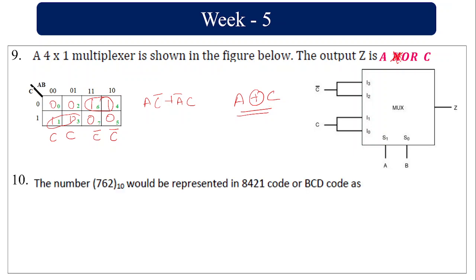The number 7, 6, 2 would be represented in 8-4-2-1 code (BCD code): each digit is represented by its 4-bit binary value. For 7 it is 0111, for 6 it is 0110, and for 2 it is 0010. So this is the BCD code.